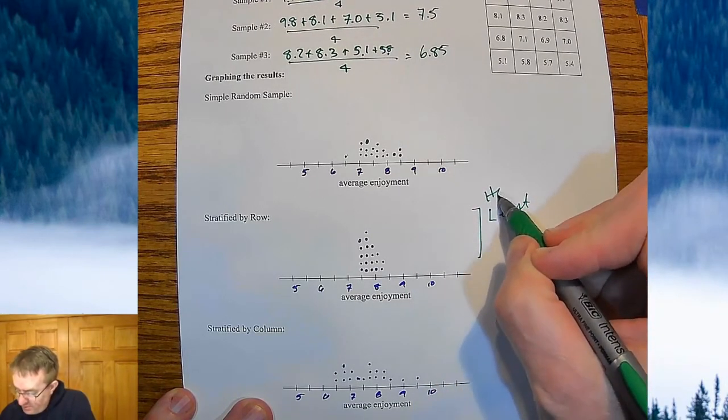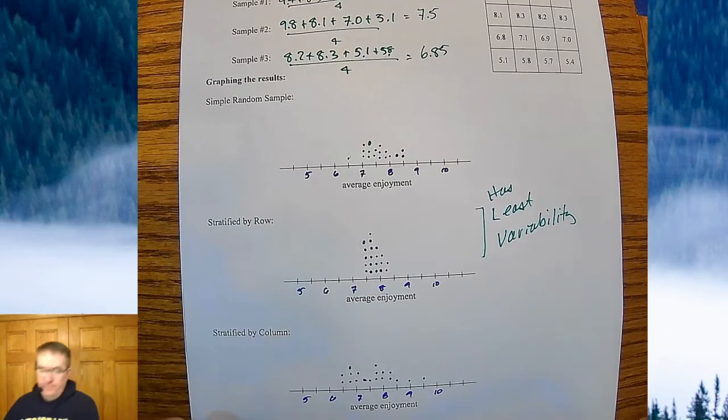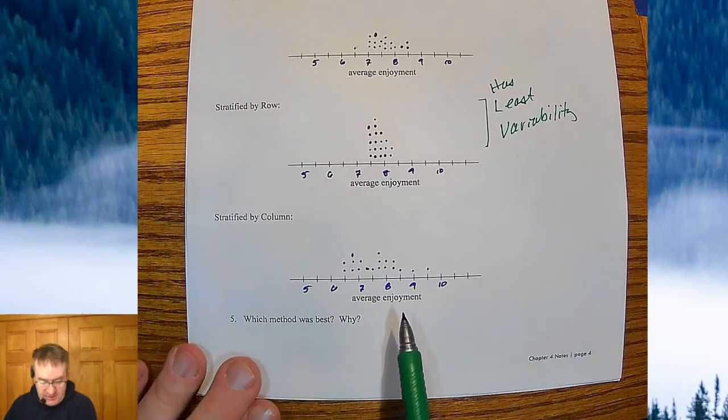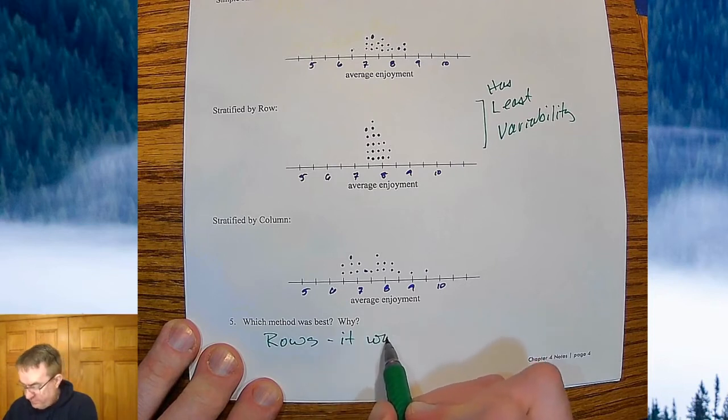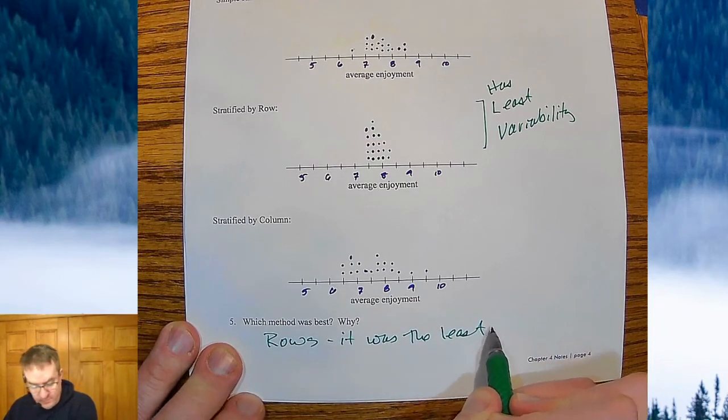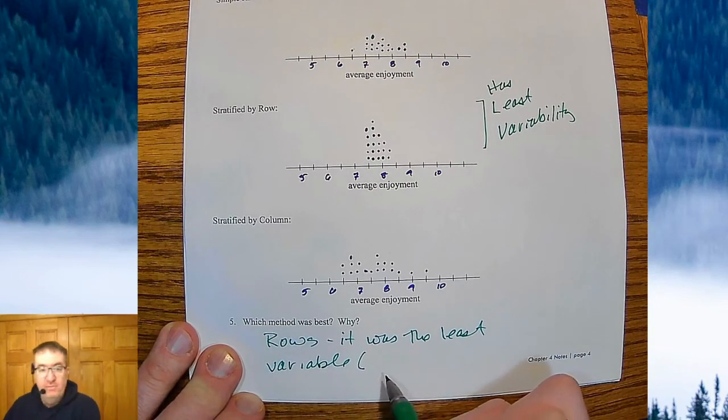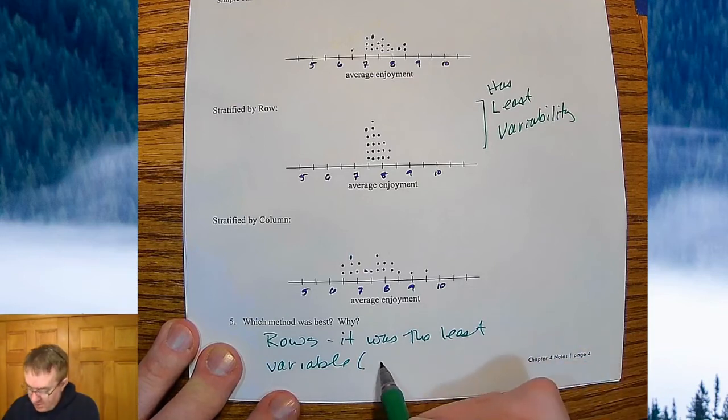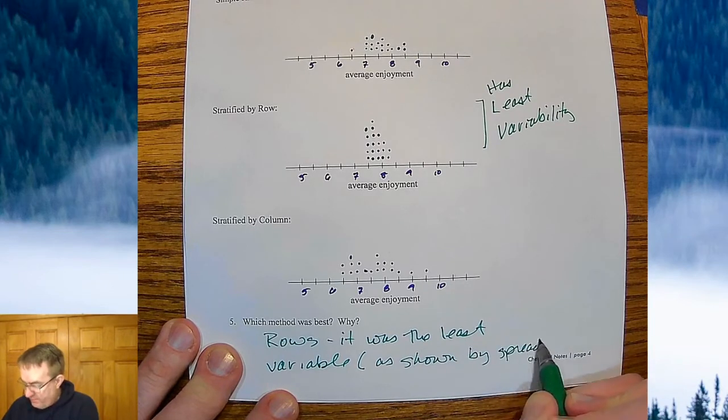This one has the least variability. I thought simple random samples were supposed to be best. Okay. Something to think about. So when we talk about which method was best, rows was the least variable. And how are we measuring variables? Normally you could do something like standard deviation or something like this. We're just going to talk about as shown by spread. Because this one is easy enough that we can kind of eyeball it.